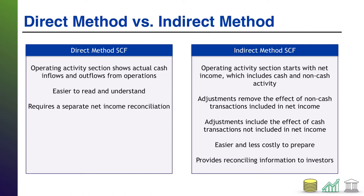One thing I'm going to state right up front so that it's crystal clear: when it comes to the direct method and indirect method statement of cash flows, the only piece of the entire statement that is different between the two is the way that the cash flows from operating activities are presented. The headers will be the same, cash flows from investing activities will be the same, cash flows from financing activities will be the same, the sum totals at the bottom — net change in cash, beginning cash, ending cash — all of that is identical. The only thing that changes is how you present the operating activity section.